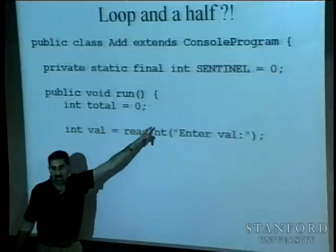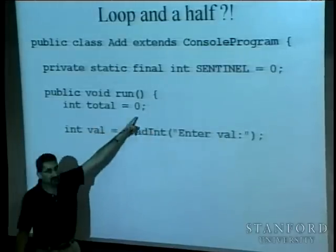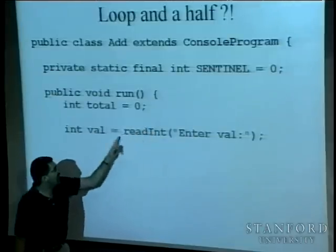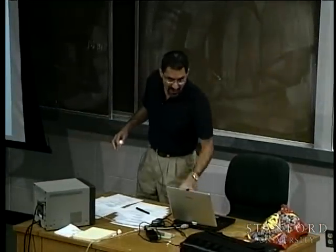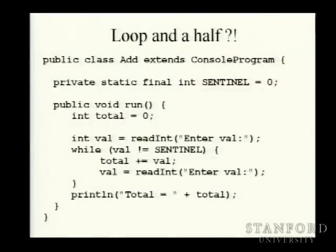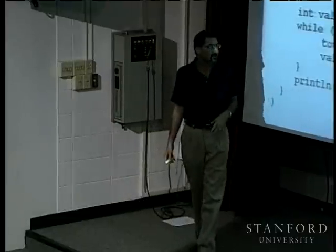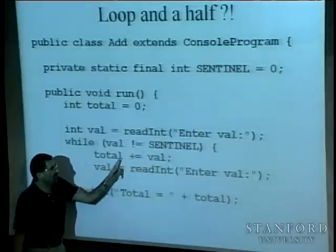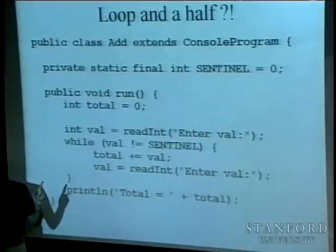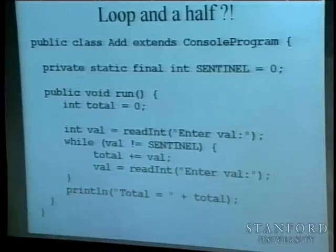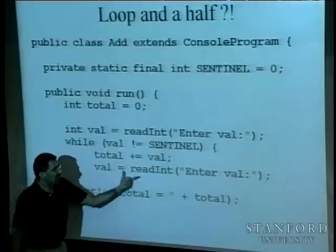We'd have a total starting at zero, read a value into `val`, and loop while `val != SENTINEL`. Inside the loop, we add val to total with `total += val`, then read the next value. But notice — the read-integer line is duplicated: once before the loop and once at the end. In computer science we really hate duplicated code, even if it's just one line.